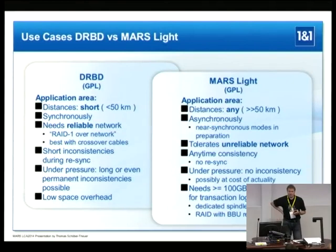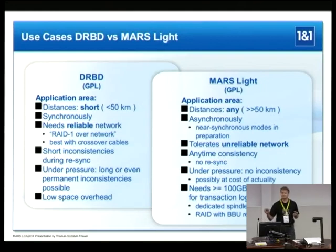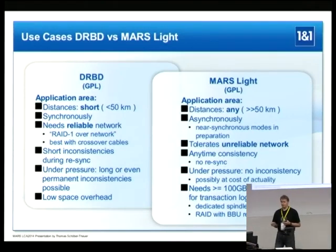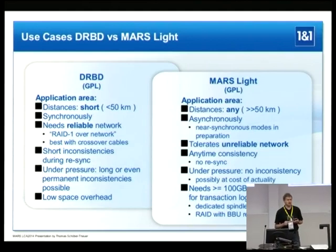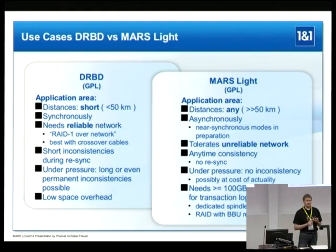If you already know DRBD, you know it works synchronously and is typically constructed as a RAID 1 over network — best used with a crossover cable for short distances only. It works very reliably in that application area. I would recommend staying with DRBD for short distances, particularly crossover cables, because it uses very low space overhead: it uses a bitmap for storing information during the disconnect state.